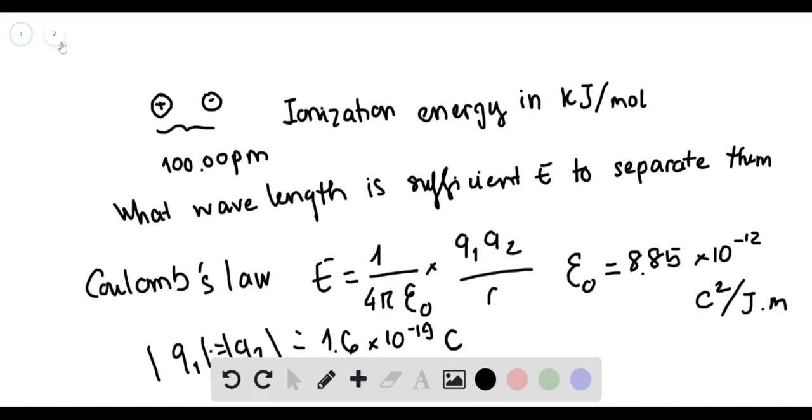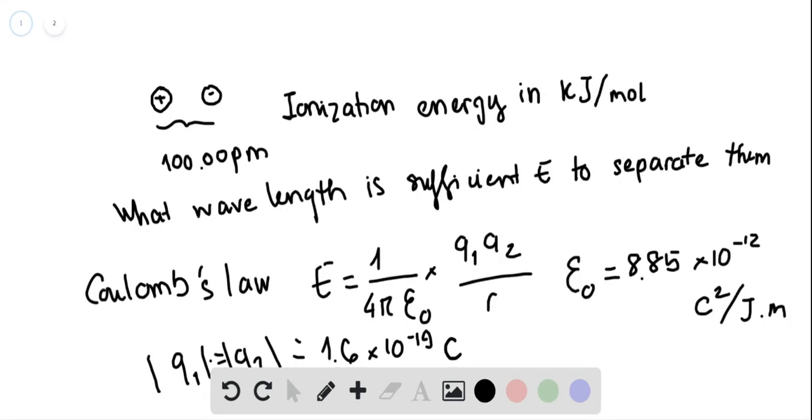This question gives us an atom with one proton and one electron separated by 100 picometers, and asks what is the ionization energy using Coulomb's law and what wavelength has sufficient energy to separate them.